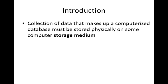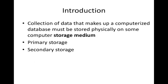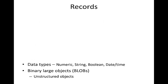A collection of data that makes up a computerized database must be stored physically on some computer storage medium. We have primary storage such as RAM, secondary storage like hard disks, or tertiary storage for backups. We will focus on how to store everything in the hard disk. I'm not going to talk about how a hard disk works — that is available in the textbook.